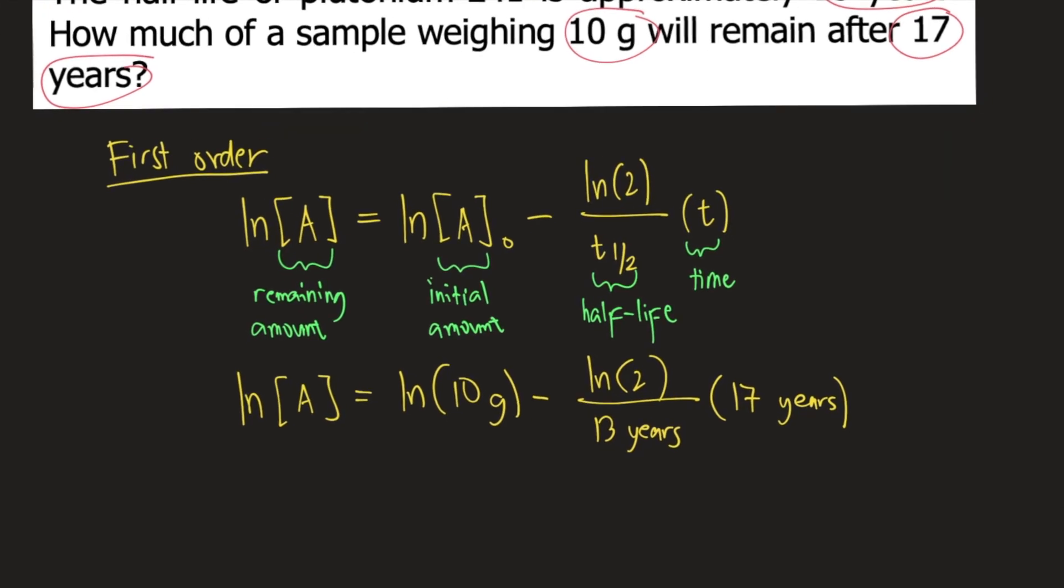If we solve for the right side of the equation, ln(A) = ln(10) - (ln2/13)(17), which equals 1.396161857.